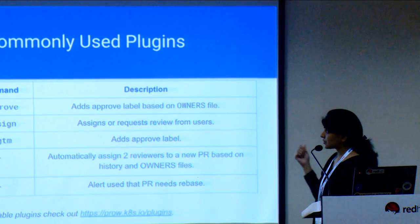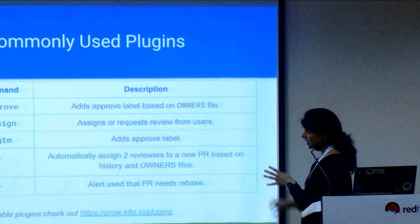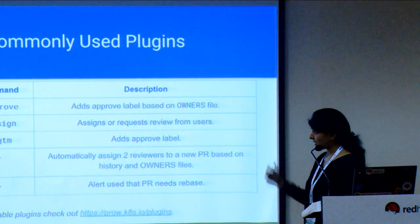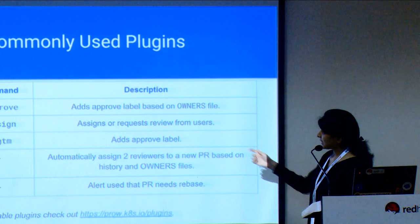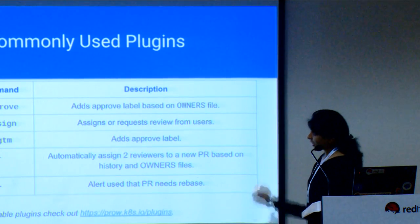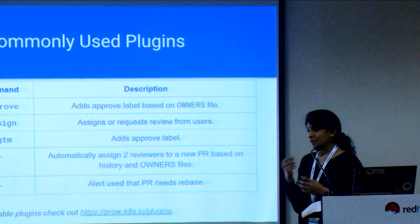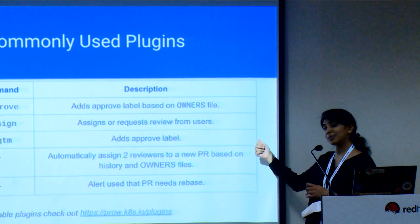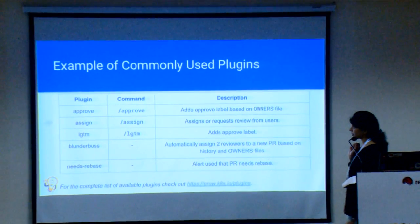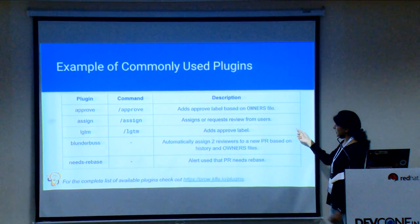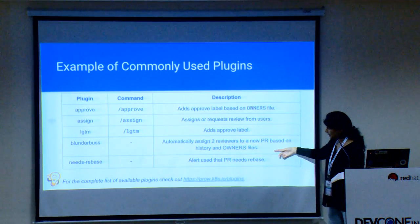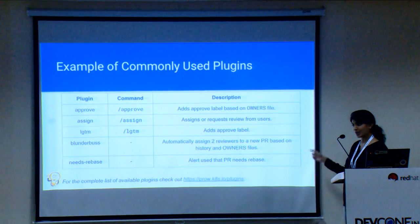Some of the commonly used plugins are: 'approve', which reads your GitHub owners file so that only owners of that project can give the slash approve command to mark a PR ready to merge; 'LGTM', which allows reviewers aware of the project to add an LGTM label; and 'assign', which lets you assign a pull request to somebody. This is useful because GitHub permissions are very granular — if you are new to a project you may not have permission to add reviewers directly. There is also the Blunderbus plugin, which checks the owners file and automatically assigns reviewers.